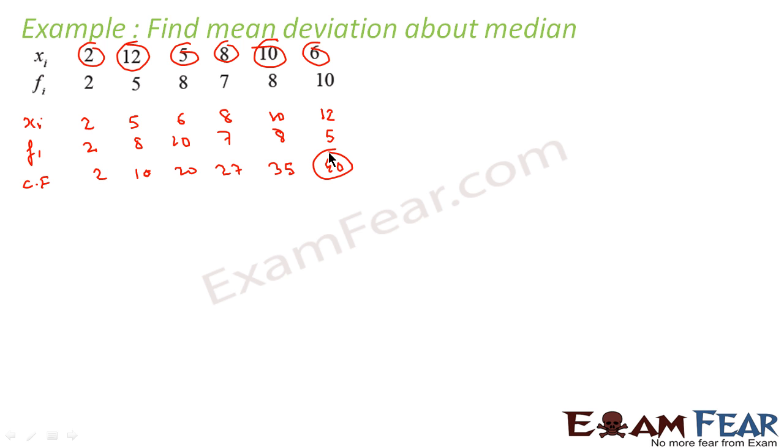We can directly make out that the last value is the total number of terms. Now to find the median, since n is equal to 40, the median term is n by 2 and n by 2 plus 1, because this is even.